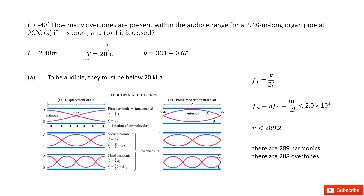So you can input the temperature T into this function to get the wave speed. The next step, we can look at how many overtones are there in this order range. We can see the cutoff for this range is just below 20,000 Hz.